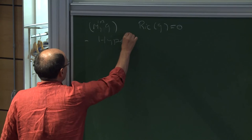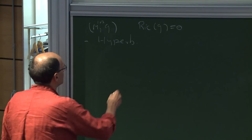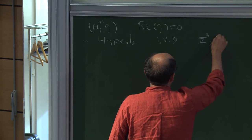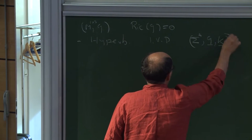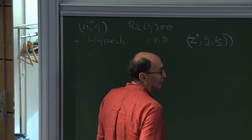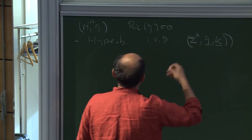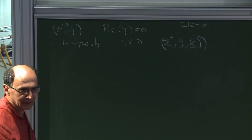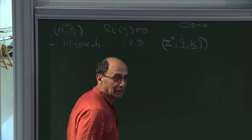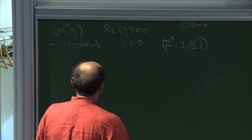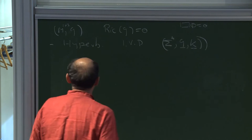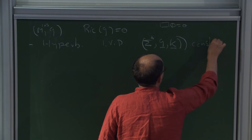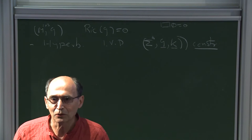Being hyperbolic leads to an initial value problem formulation, in which you start with a 3-manifold with a Riemannian metric given on sigma-3 and a symmetric 2-tensor K-bar. This is like prescribing phi and the time derivative of phi in the wave equation. You have some constraint equations here which have to be solved — that's a minor detail, though lots of people work on just the constraint equations.